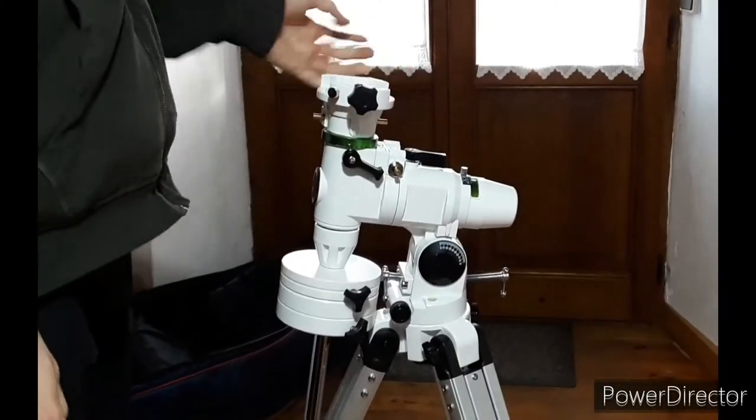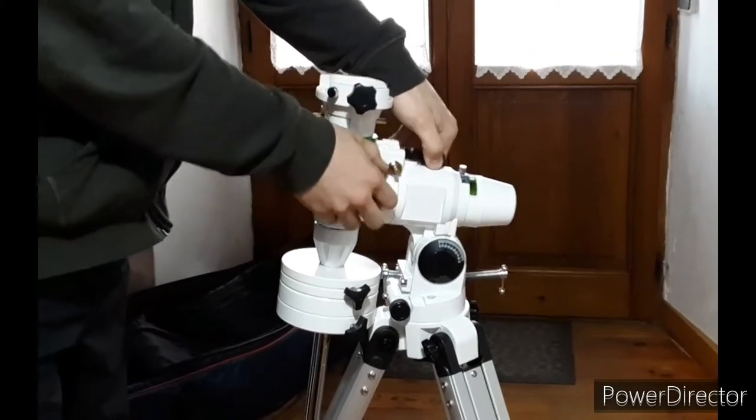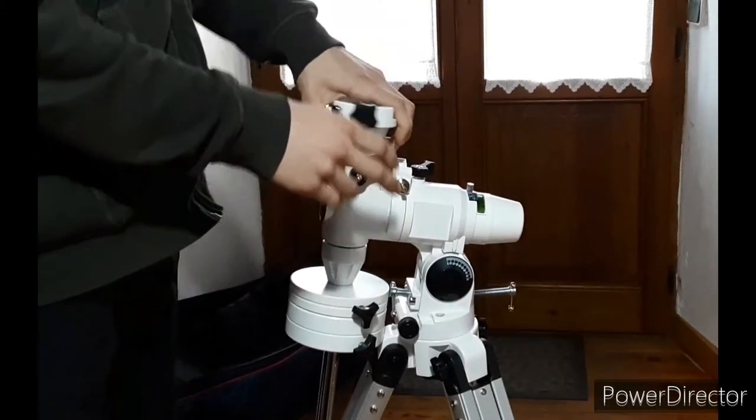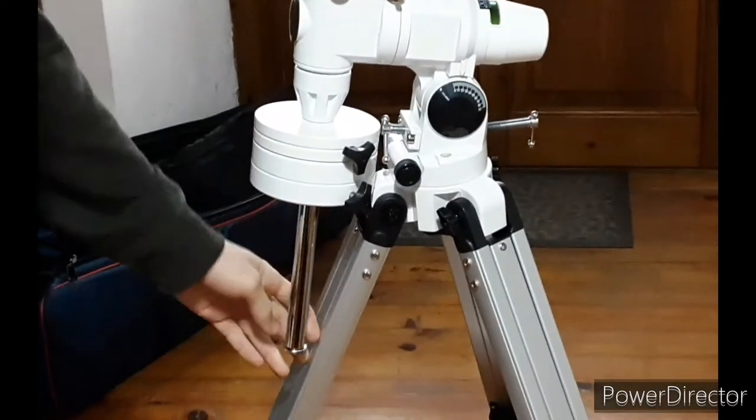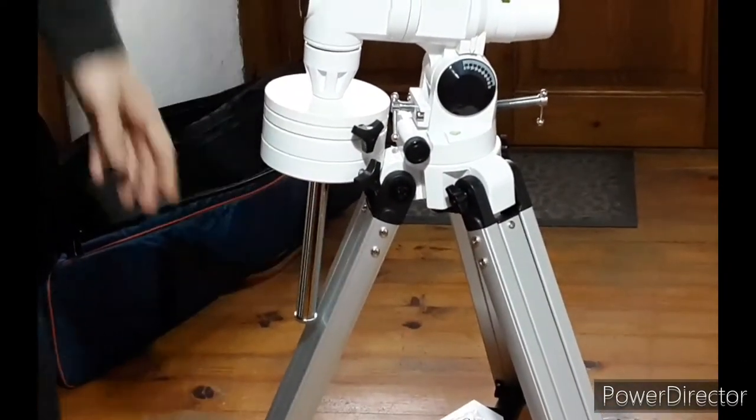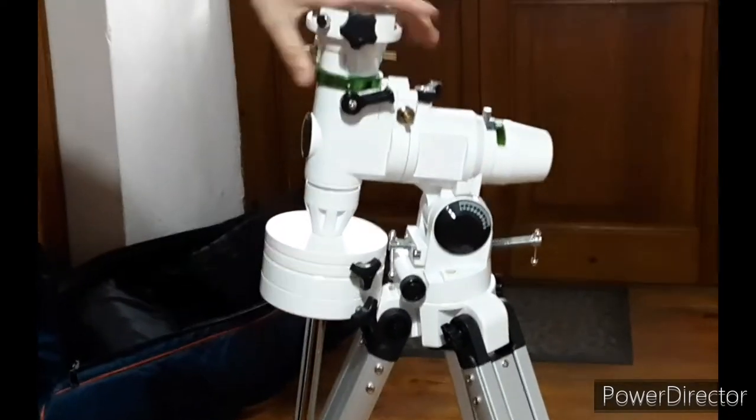The differences between them are that with the equatorial one like this, you can follow the rotation of the Earth around the Sun with this axis and with this one. And as you can see, the counterweight is as big as my grandmother's ears.